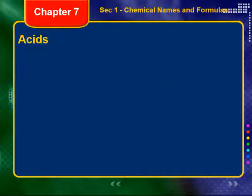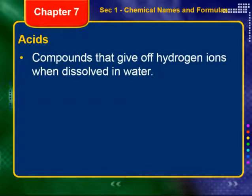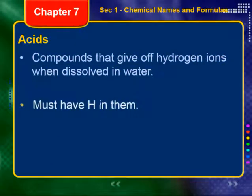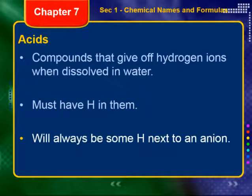Now we're going to go over some stuff for acids. Acids and bases are pretty important later on in chemistry, so we want to be aware that there is a naming system for those. An acid is a compound that gives off hydrogen ions when dissolved in water. So if they're going to give off hydrogen atoms, you have to have hydrogen in them — there will always be some hydrogen, maybe one, two, or three, next to some anion.